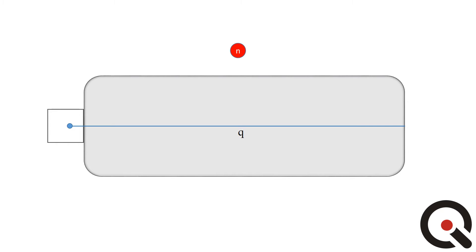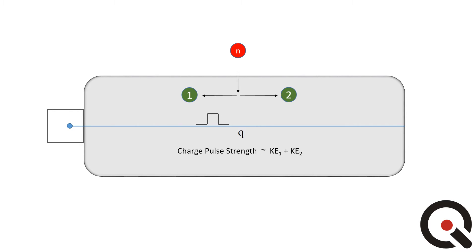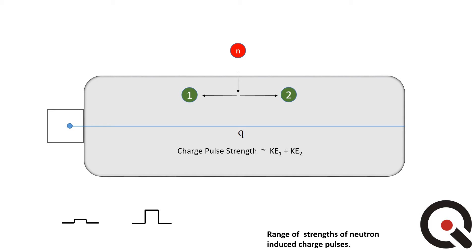For example, helium-3 reacts with a thermal neutron to produce a triton and a proton. As these energetic particles travel through the gas, they deposit energy into the material, which is detected by the anode and measured as a signal. The location and relative height of this peak energy is characteristic of the energy of the reaction.